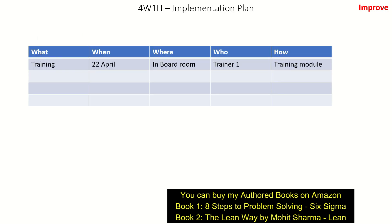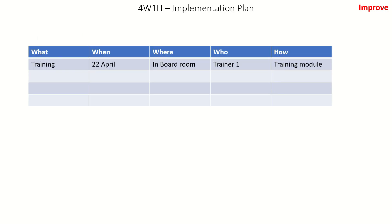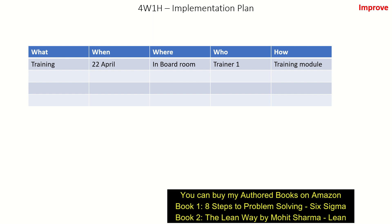The next thing the team has to do in the Improve phase is create an implementation plan. They can use the 4W and 1H tool: What is to be done? When is it to be done? Where is it to be done? Who will do it? And how? One example is the training to be provided to the associates — it has to be done on a particular date, in the training room, by Trainer 1, using a training module that has been created covering what will be taught on day 1, day 2, and so on.